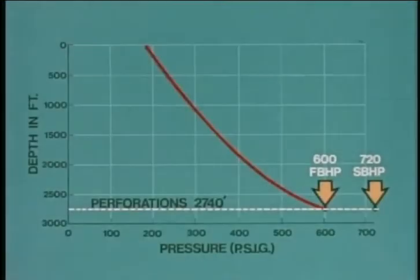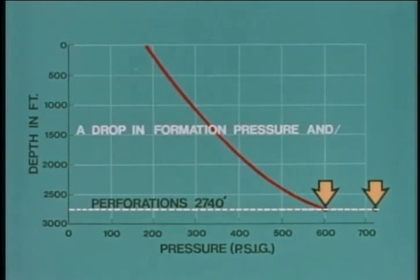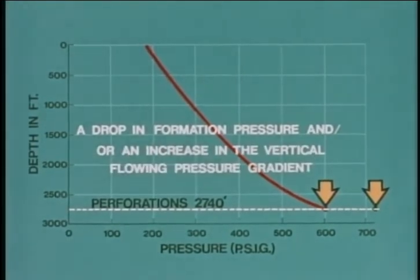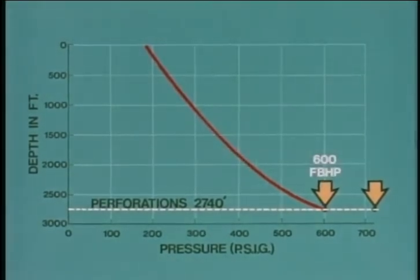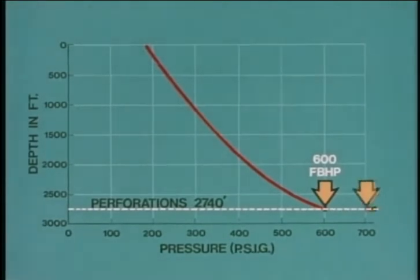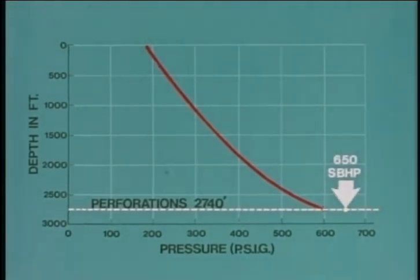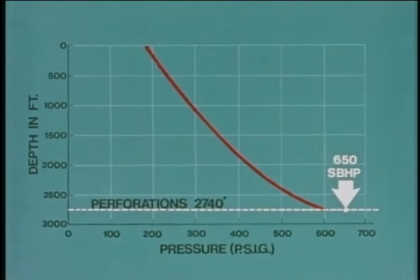The well dying and dead. In a naturally flowing well, the most common changes that occur to cause a production decline are: first, a drop in formation pressure, and second, an increase in the vertical flowing pressure gradient. In the first case, when a decline in formation pressure occurs, the pressure difference forcing fluid from the formation into the wellbore will decrease and consequently less liquid will enter the wellbore.